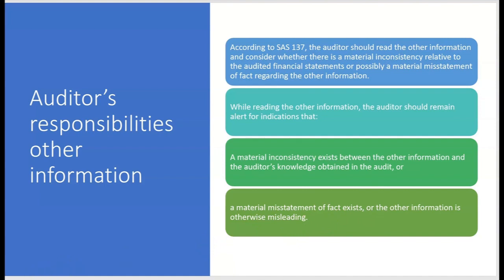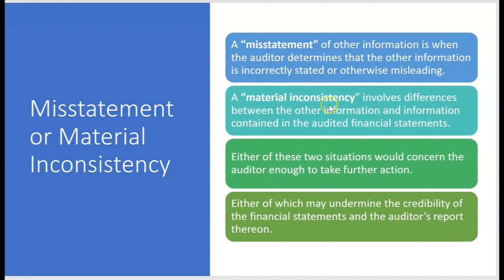The auditor needs to read the other information and look for obvious errors — whether it's a misstatement or a material inconsistency. Either of these situations would concern the auditor enough to take further action, as either may undermine the credibility of the financial statements and the auditor's report. A misstatement of other information means the other information is incorrectly stated or misleading. A material inconsistency involves differences between the other information and information in the audited financial statements.